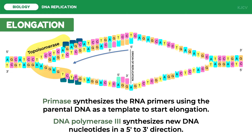One strand is replicated discontinuously with the help of several primers placed along the forming daughter strand, running from 5 prime to 3 prime.